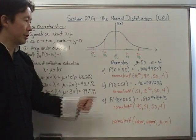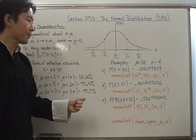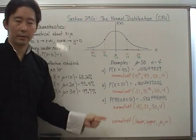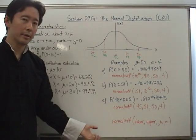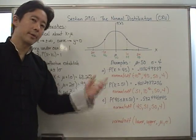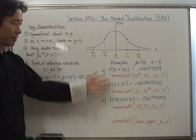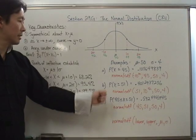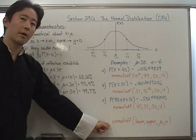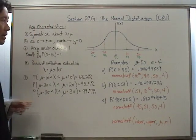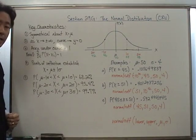You now know how to calculate probabilities for the normal distribution using your calculator. For the IB exam, there will be a paper where you cannot use your calculator — we'll talk about how to handle that in class, as it's easier to explain together. For now, you know how to calculate any probability of the normal distribution curve using the calculator and based upon the key characteristics of the bell curve. Good luck and see you in class.